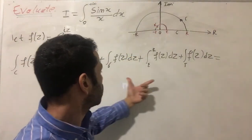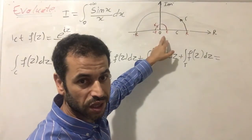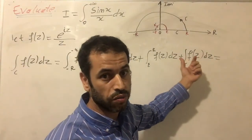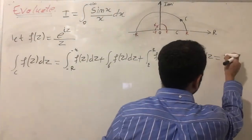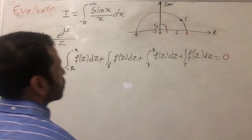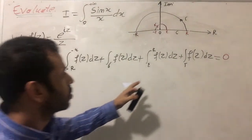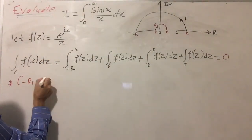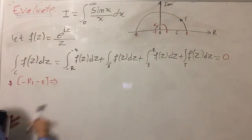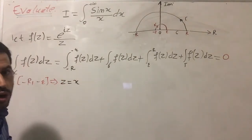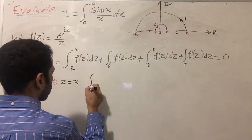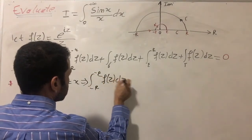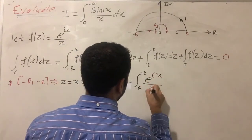Now I'm going to split this integral and calculate each part. Over the segment from minus r to minus epsilon, we have z equal to x since we are working along the x-axis. So the integral from minus r to minus epsilon of f(z) dz equals the integral of e^(ix) over x dx. From epsilon to r, the integral of f(z) dz equals the integral from epsilon to r.